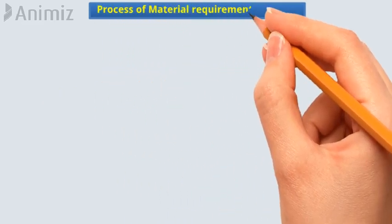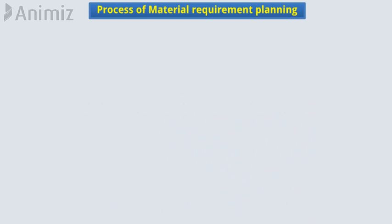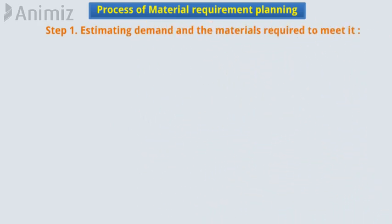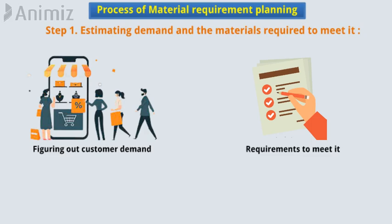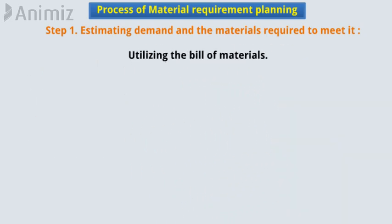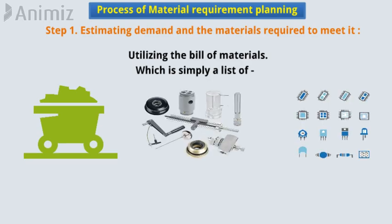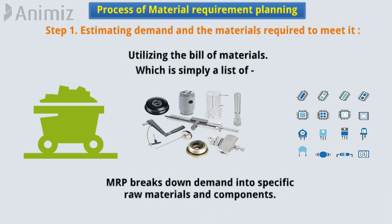Process of material requirement planning: The MRP process can be split into four basic steps. Step 1: Estimating demand and the materials required to meet it. The initial step is figuring out customer demand and the requirements to meet it. Utilizing the bill of materials — a list of raw materials, assemblies, and components needed to manufacture an end product — MRP breaks down demand into specific raw materials and components.